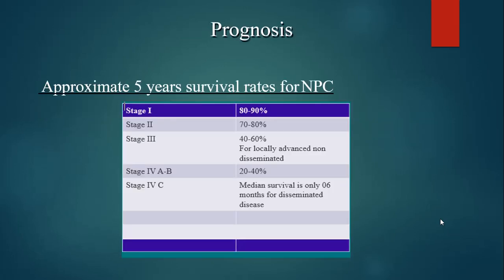What is the prognosis of nasopharyngeal carcinoma? In stage 1, the 5-year survival rate is 80-90%. In stage 2, it drops to 70-80%. In stage 3, it drops further to 40-60%. In stage 4, the prognosis is very poor with only 20-40% surviving after 5 years. In stage 4C with disseminated disease, the median survival is only 6 months. Nasopharyngeal carcinoma is a curable tumor in early stages, especially by radiotherapy, because it is a very radiosensitive tumor, and surgery is usually not done due to the many critical structures surrounding the nasopharynx.